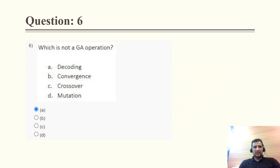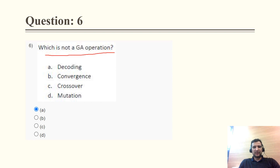Question 6: Which is not a GA (genetic algorithm) operation? The options are decoding, convergence, crossover, and mutation. The correct answer is decoding — decoding is not a genetic algorithm operation, but convergence, crossover, and mutation are all GA operations.